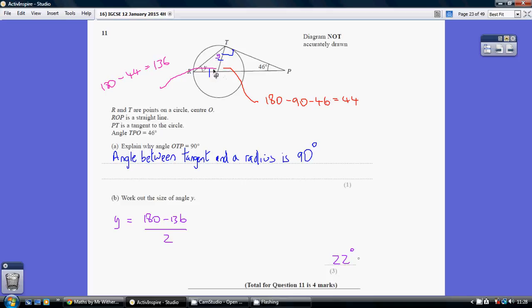Once we know that, we can work out this pink angle here, because angles in a straight line add up to 180. So 180 take away 44 is 136. So angle ROT equals 136.